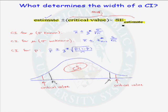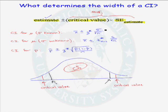Now let's take the standard error of our estimate. For the confidence interval for mu when sigma is known, the standard deviation of our estimate x-bar is given by sigma over the square root of n. We can't do anything about sigma — it is a fixed number. But we could change the number of observations we select for our sample. If we increase our sample size, we will decrease the width of our confidence interval.